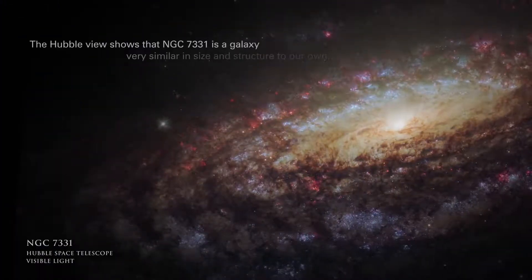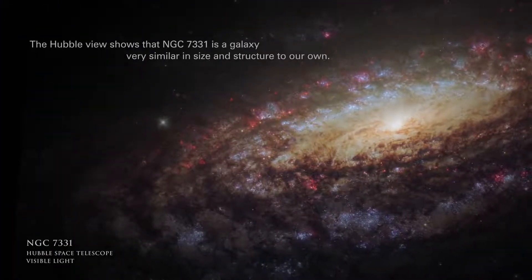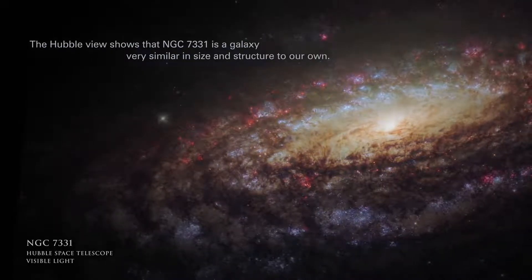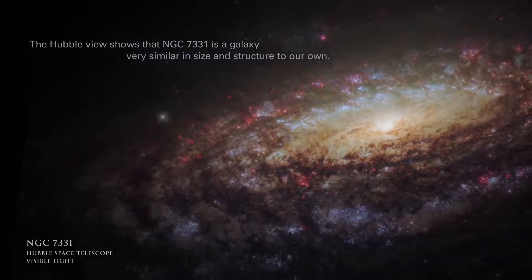The Hubble view shows that NGC 7331 is a galaxy very similar in size and structure to our own.